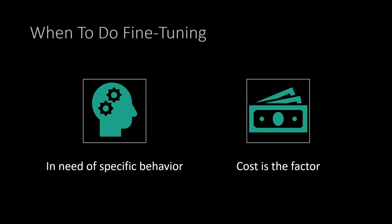The idea is to first start with prompt engineering and see how far you can go with the base model, then decide on fine-tuning as your last option. At a high level, there are two decision points that would push you toward fine-tuning. The first one is when you want a different kind of output altogether, or you want to teach your model something new — adding a new skill that your base model is not aware of.